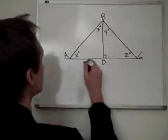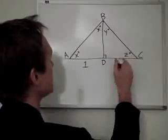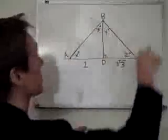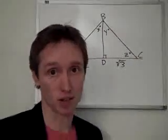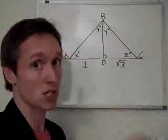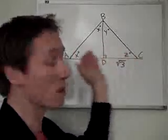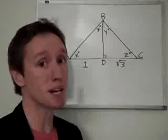So the first thing to look at, they tell us that AD is 1 and DC is root 3. So we can tell just there that this figure is not drawn to scale. Now when it says that, figure not drawn to scale, you can't assume anything about the angle measures or the lengths just based on appearance.